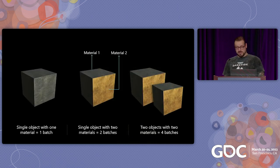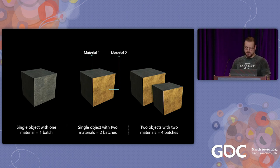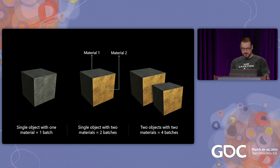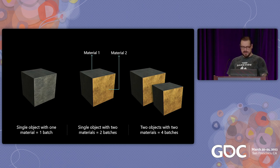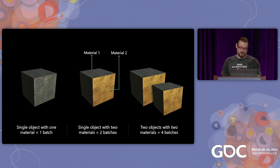One way to think about it: each separate object creates one batch for each material. A single object with one material creates one batch. A single object with two materials creates two batches. Two objects with two materials creates four batches. There are also things like animation poses that create extra batches, but meshes and materials are the most prominent ones.